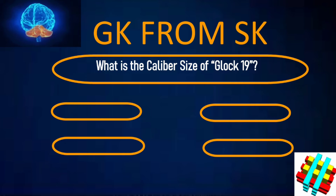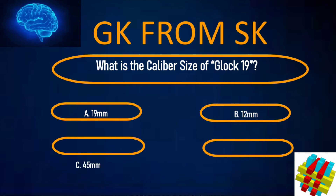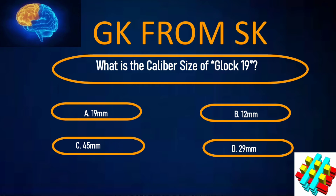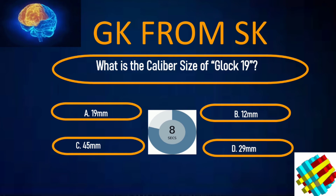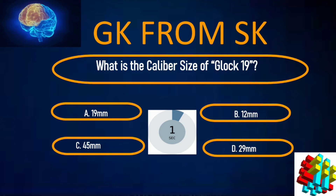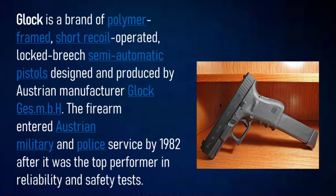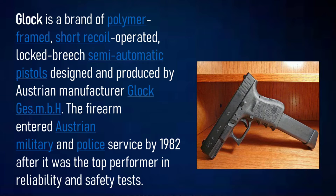What is the caliber size of the Glock 19? A. 19mm, B. 12mm, C. 45mm, D. 29mm. Your time starts now. Correct answer: A. 19mm. Glock is a brand of polymer-framed, short recoil operated, locked breech semi-automatic pistols designed and produced by Austrian manufacturer Glock Ges.m.b.H. The firearm entered Austrian military and police service by 1982 after it was the top performer in reliability and safety tests.